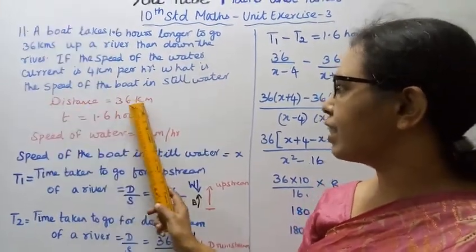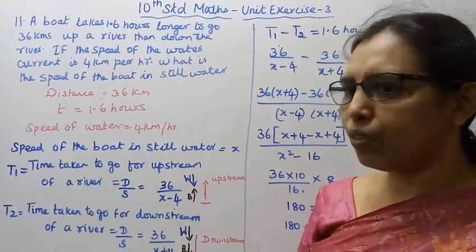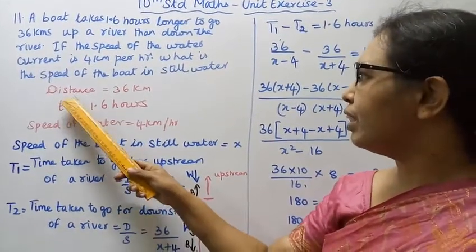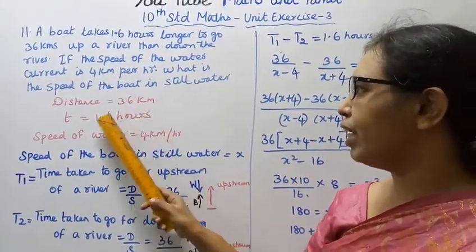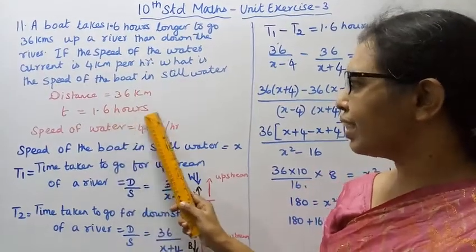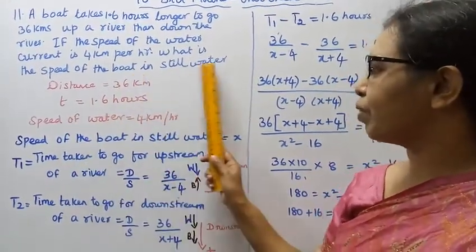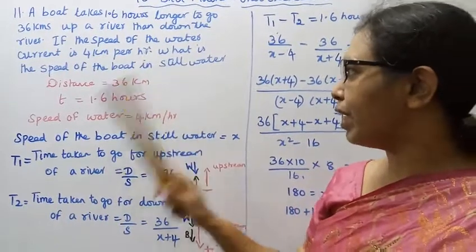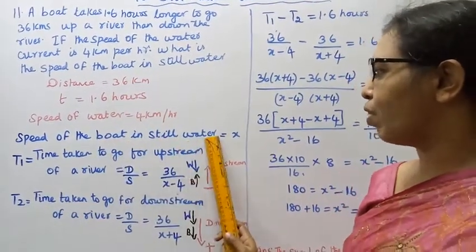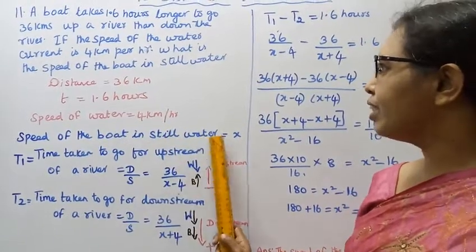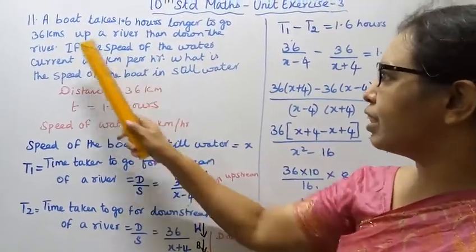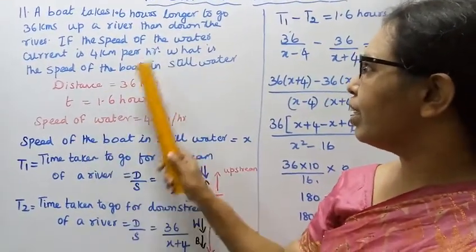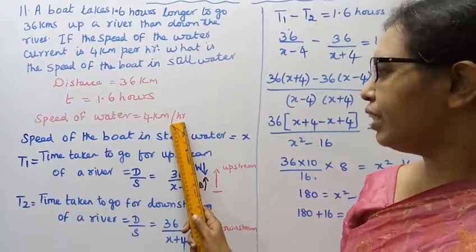The distance is 36 kilometers, both upstream and downstream. The time difference is 1.6 hours. The speed of the water is 4 kilometers per hour. We need to find the speed of the boat in still water. Distance is 36 kilometers, time is 1.6 hours, water speed is 4 kilometers per hour.